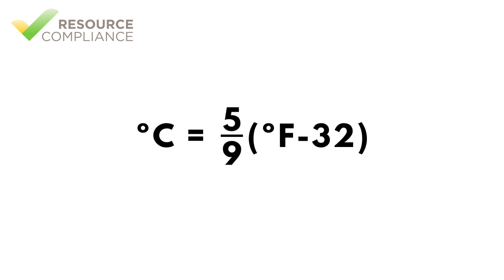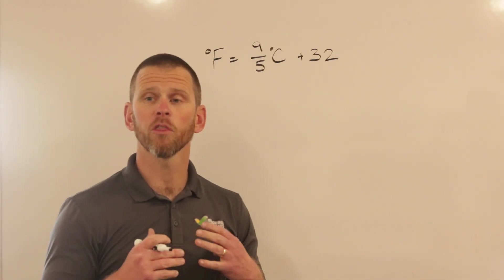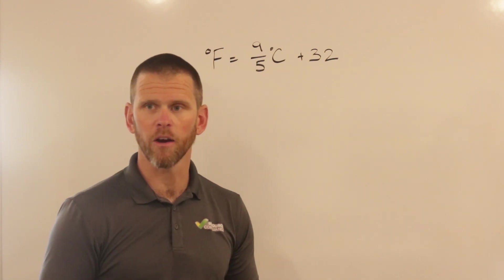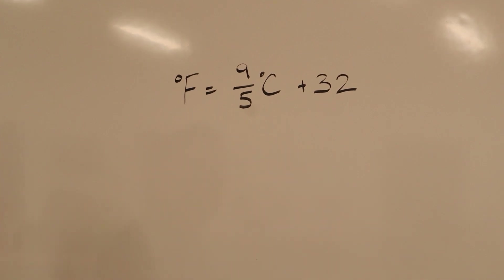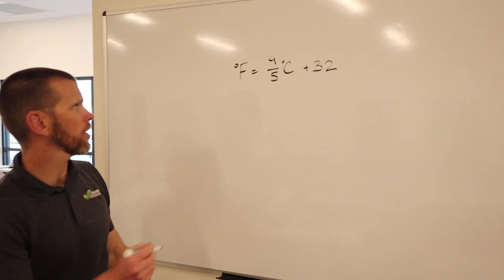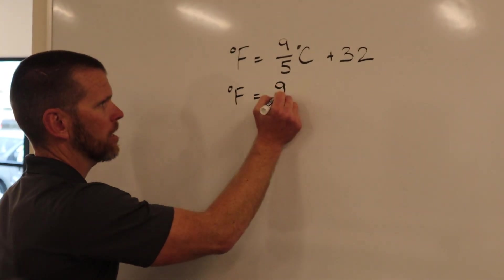Let's use the equations to solve a problem. In this example, we're going to convert 30 degrees Celsius into degrees Fahrenheit. The equation for the conversion is written on the whiteboard already, and so we just need to plug in our 30 degrees Celsius into the equation.